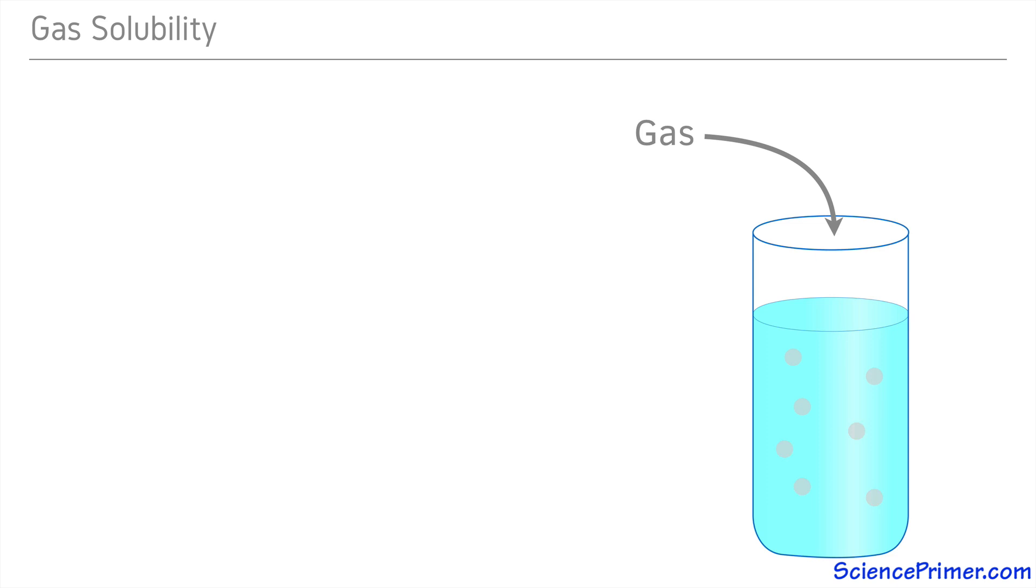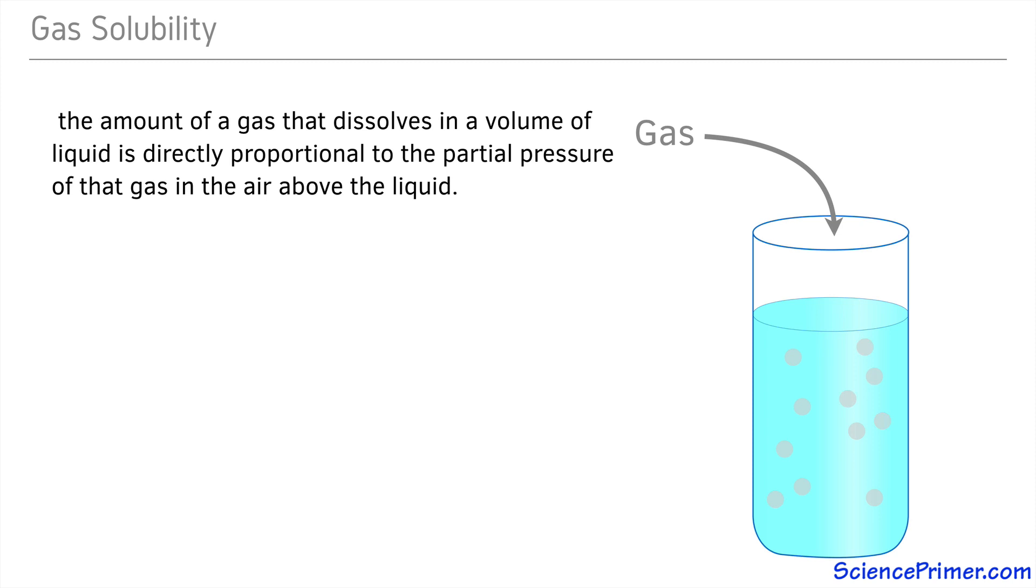The amount of a gas that dissolves in water is described by Henry's Law, based on work done by the scientist William Henry back in the early 1800s. The law states that at a constant temperature, the amount of a given gas that dissolves in a given type and volume of liquid is directly proportional to the partial pressure of that gas in the air above the liquid. This is a wordy way to say that the more of a gas there is in the air above the liquid, the more of that gas will dissolve in the liquid.